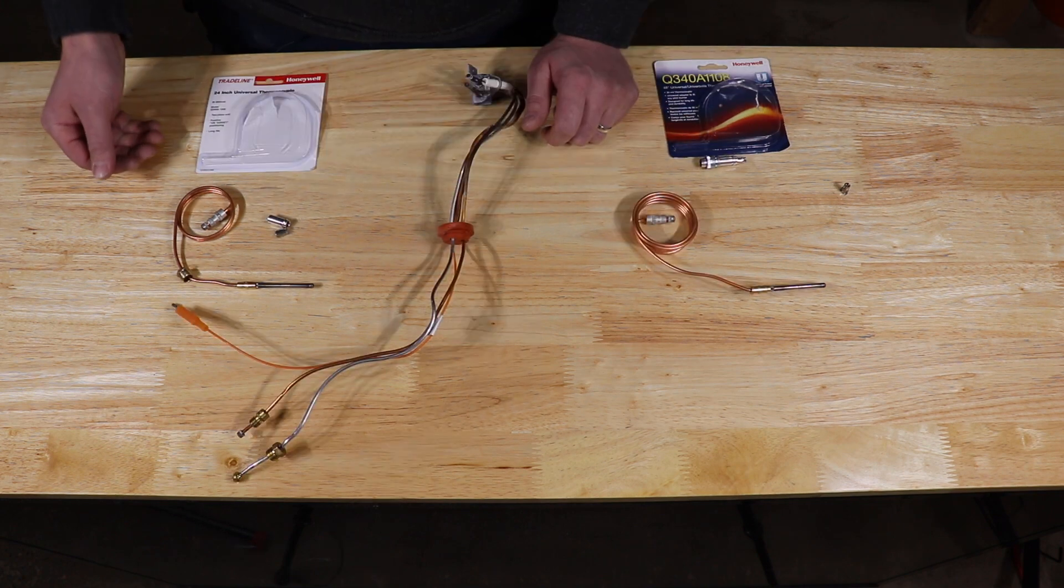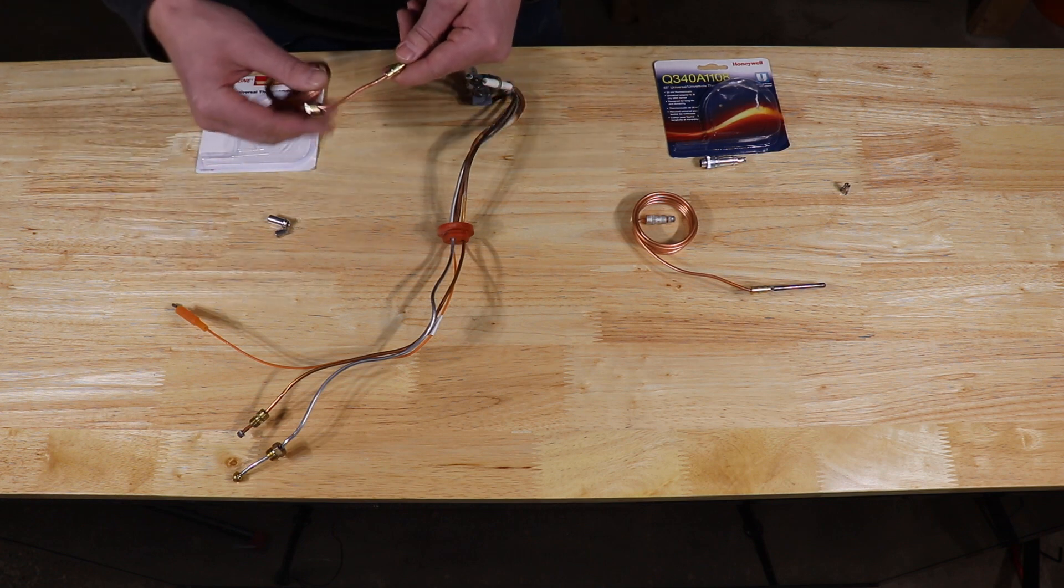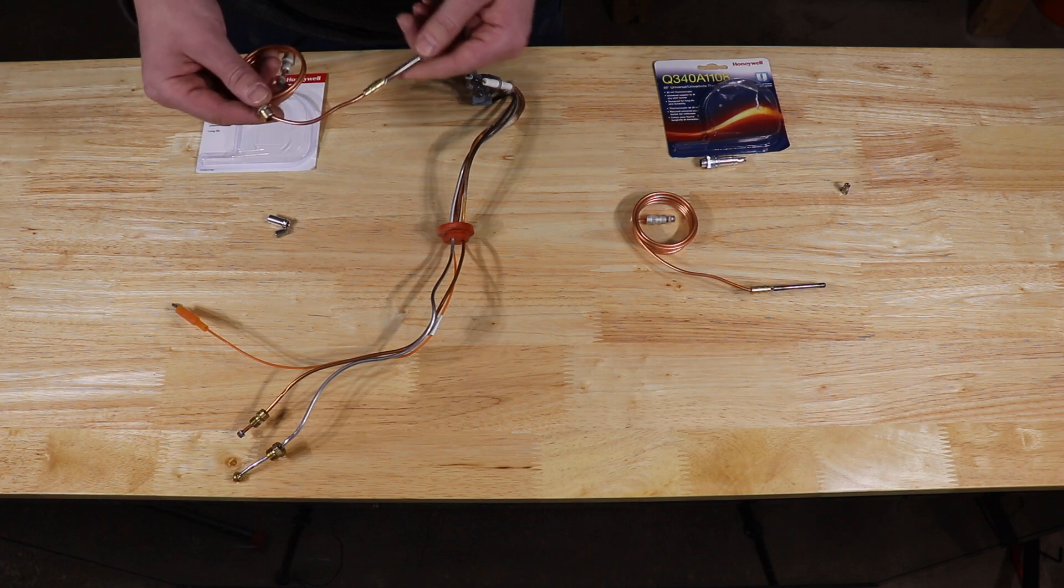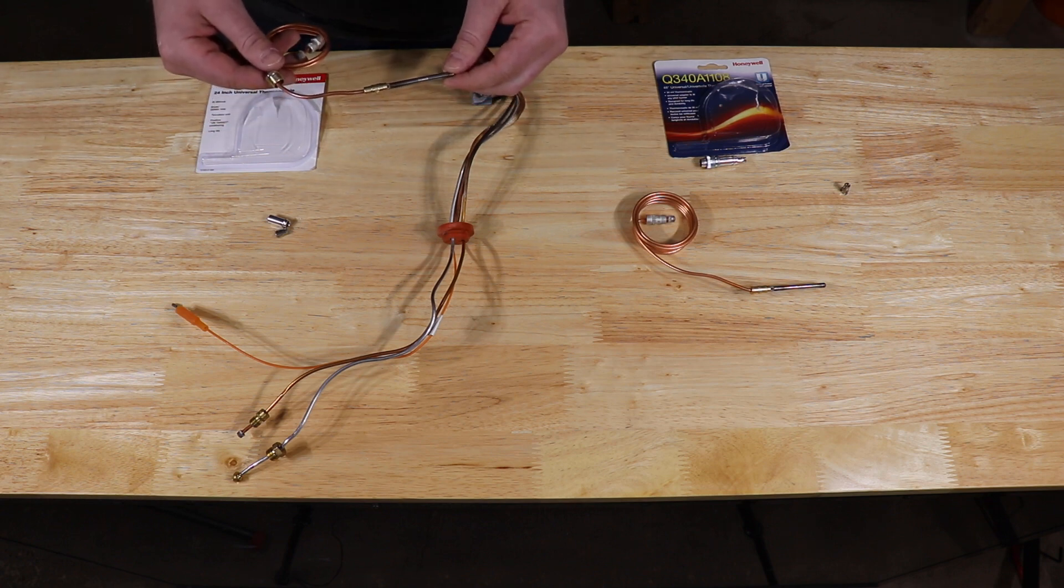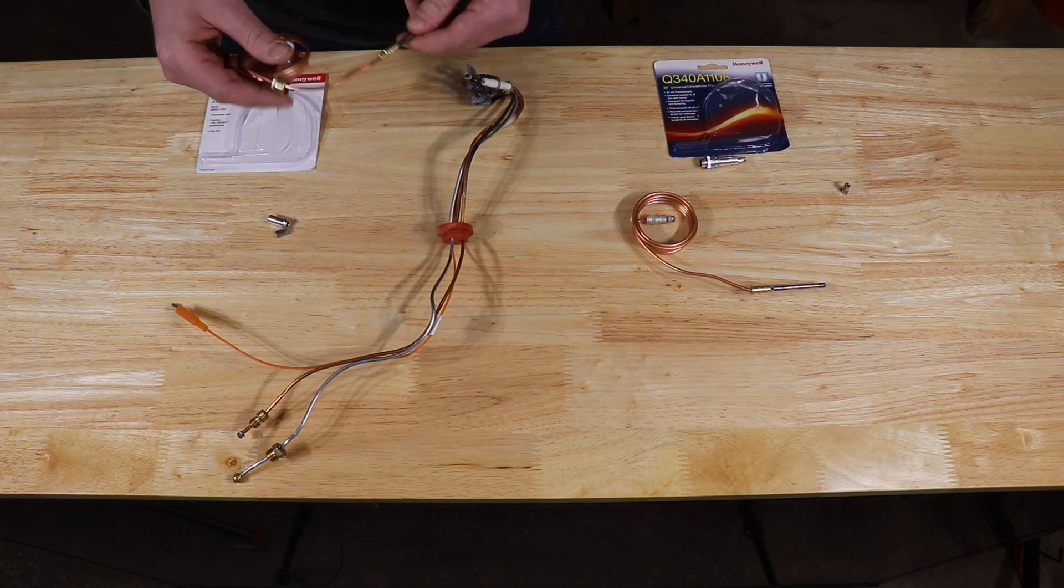With the Q90A series, things are a little bit different. The thermocouple comes with the retaining nut already installed and can't be removed. If you're using a push-fitting pilot assembly, this nut would just float there and be not used.